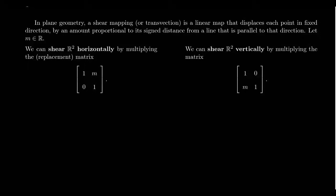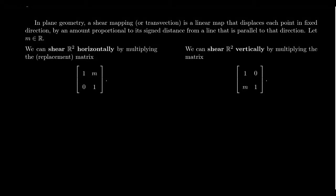In this video, I want to talk about what a shearing map, or sometimes called a transvection, does to planar geometry. This is honestly going to be probably the weirdest of all the geometric transformations we talked about in this lecture, because this one might feel a little less intuitive. But its connection to the triangular matrices is quite solid, and it's worth mentioning.